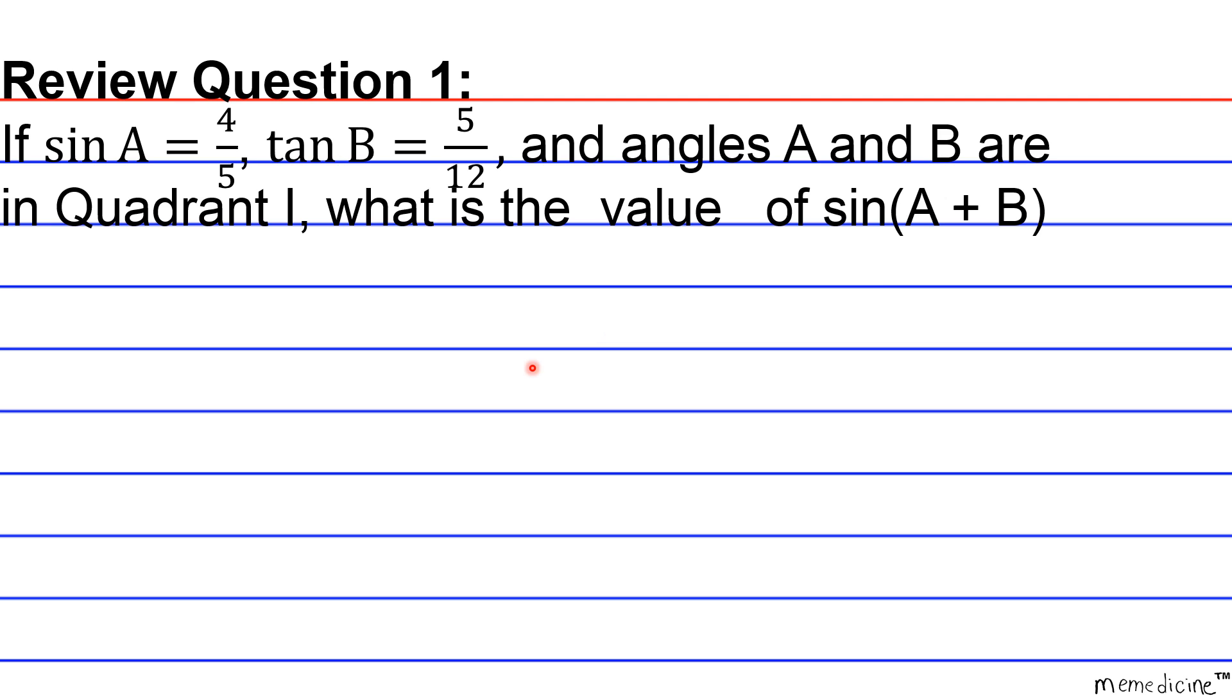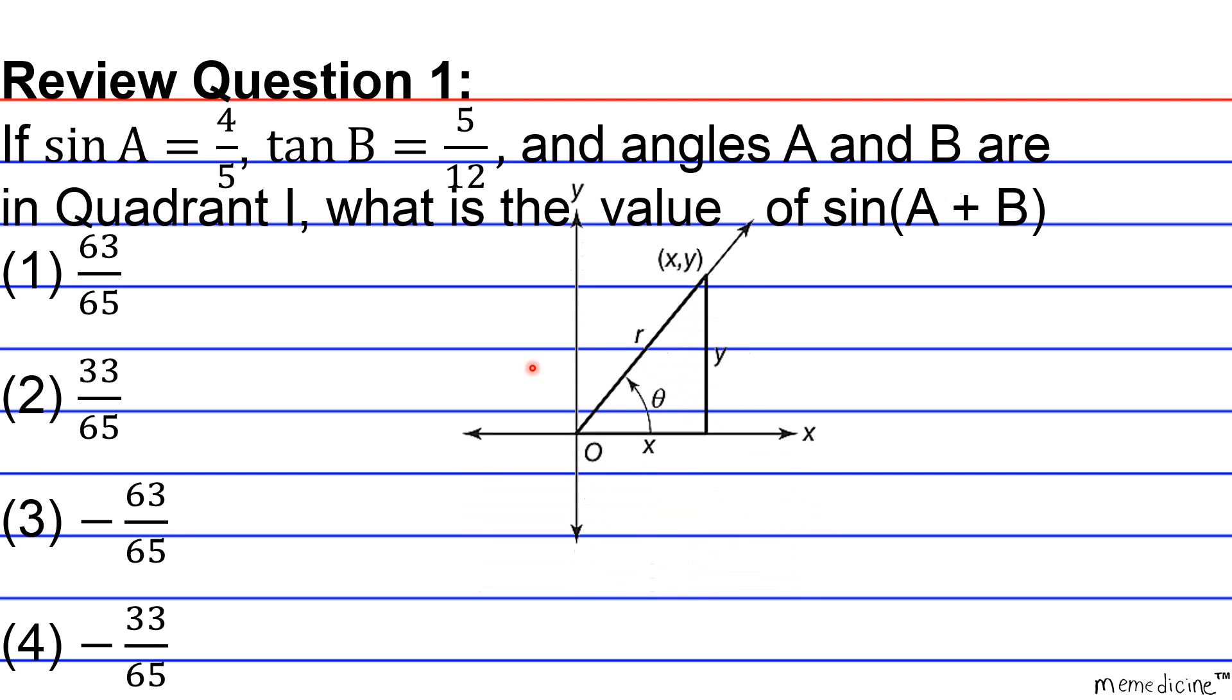Is it going to be 1, 63 over 65, 2, 33 over 65, 3, negative 63 over 65, or 4, negative 33 over 65? I'll give you a moment to think.